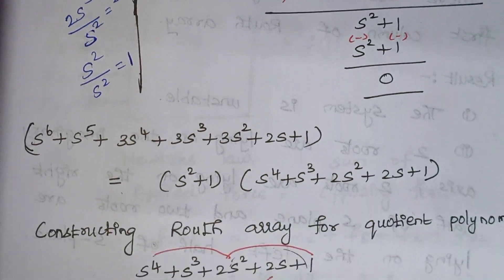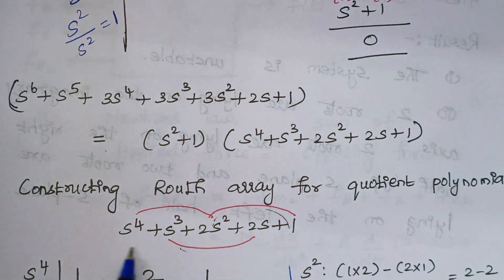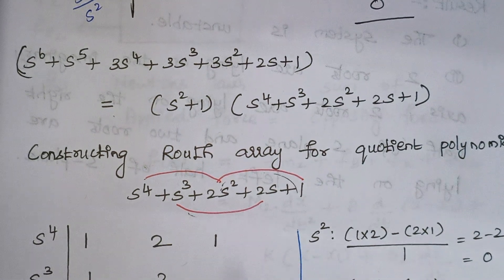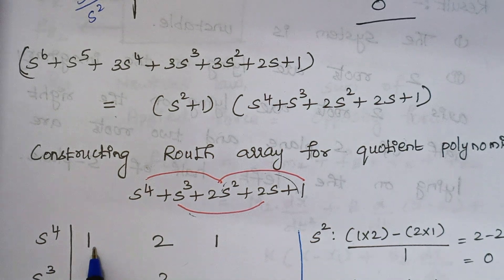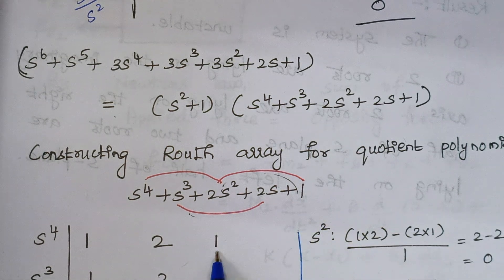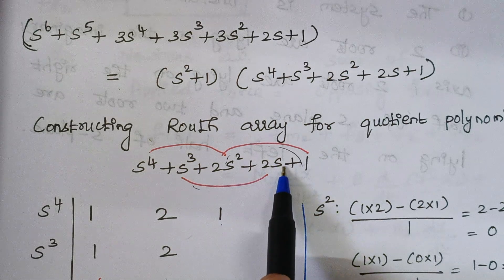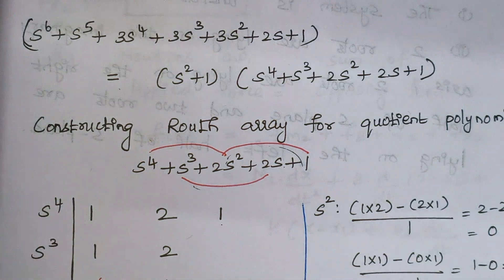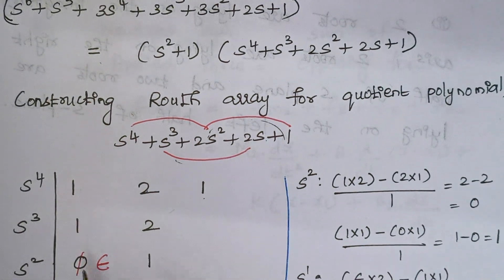The next step is to construct the Routh array for the quotient polynomial. The maximum power is 4, so we start with S⁴. The even coefficients: coefficient of S⁴ is 1, S² is 2, S⁰ is 1. The odd row: coefficient of S³ is 1 and S¹ is 2. Then we find remaining terms: 1×2 minus 2×1 divided by 1 gives 2 minus 2 = 0. So the first term is 0, and 1×1 minus 0×1 divided by 1 gives 1 as the second term.